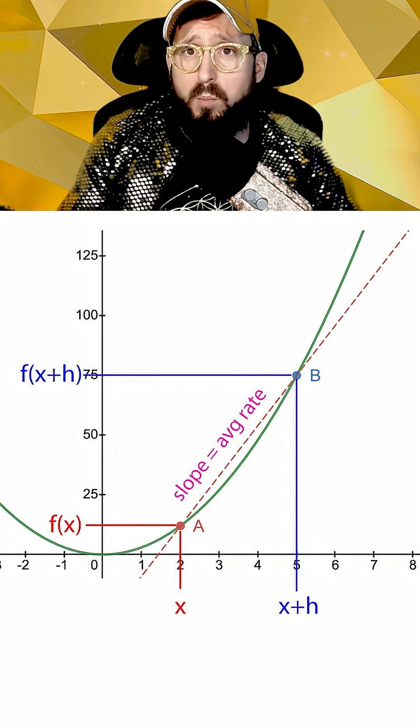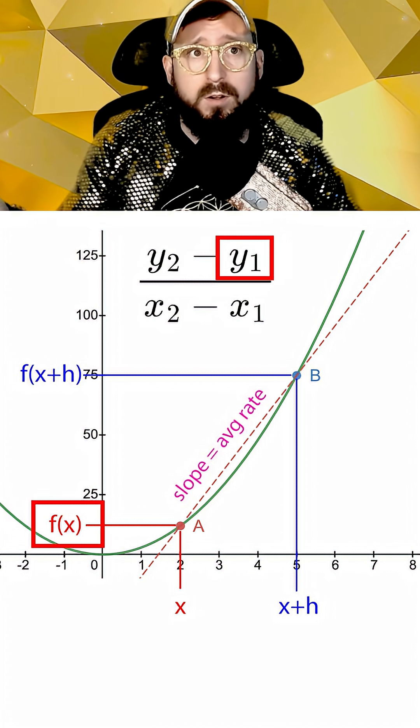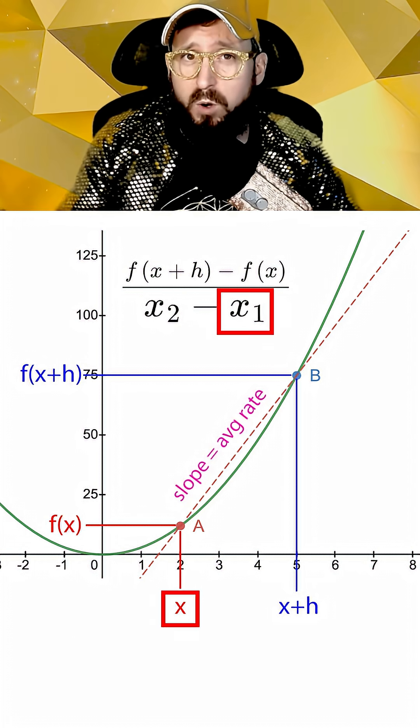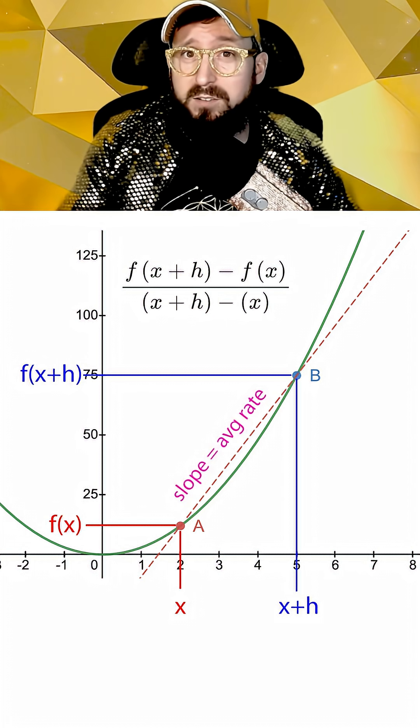If we wanted to write this slope as a formula, this would be y2 minus y1, or f(x+h) minus f(x), divided by x2 minus x1, or x plus h minus x, which just equals h.